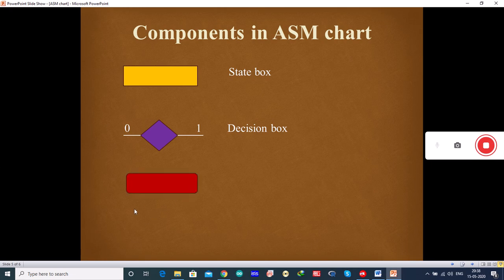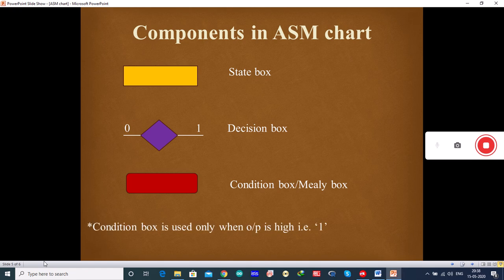And the rectangle with rounded corners is called condition box, which is used only in Mealy state machines. That is why sometimes it is also called as Mealy box. Here one important point to note is that this Mealy box is used only when the output is high. We have seen in the state diagram sometimes you have output 0 and output 1. So, we will be using this particular Mealy box or condition box only when the output is high.